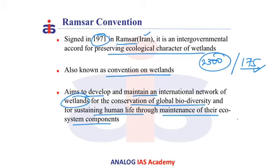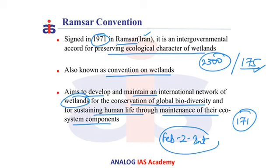So far, 171 countries have ratified this convention and are declaring some areas as wetlands of international importance. Every year, February 2nd is declared as International Day of Wetlands, as the Ramsar Convention was signed on this day.